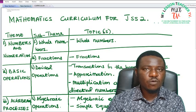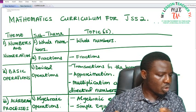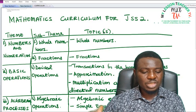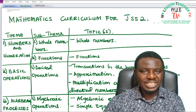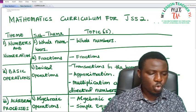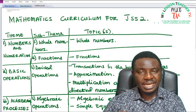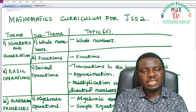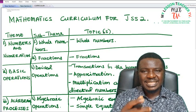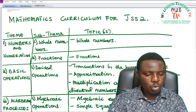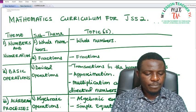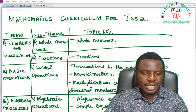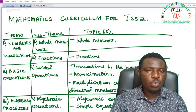In GSS1 under Whole Numbers, we were taught counting in millions, billions, trillions, and we did some quantitative reasoning. In GSS2 under Whole Numbers, you will be exposed to content like expressing whole numbers in standard form — having known how to write numbers in billions, trillions, and quadrillions, you shall be taught how to express these larger numbers in standard form, as well as decimal numbers in standard form. You will also look at prime factors, prime factorization, LCM, HCF, and squares and square roots.